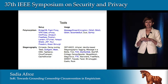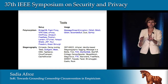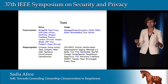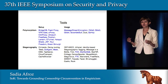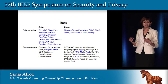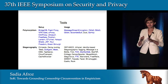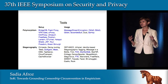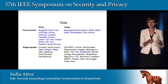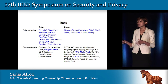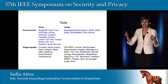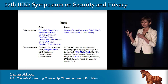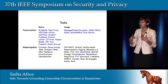Looking at this table, tools in blue font are deployed in the real world with actual users; tools in black font are proposed by research but not deployed. We see that most real-world tools focus on hiding properties of the connection setup using polymorphism. Most research tools focus on patterns of usage — for example, packet length distributions — and typically use steganographic techniques to achieve that.